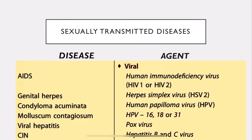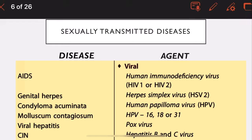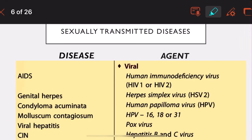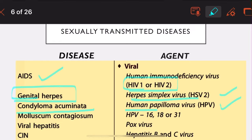Moving on to viral sexually transmitted diseases: AIDS is transmitted by human immunodeficiency virus type 1 and type 2. Genital herpes is caused by herpes simplex virus 2 (HSV-2). Condyloma acuminata is caused by HPV - human papillomavirus. Molluscum contagiosum is caused by poxvirus, with HPV strains 16, 18, or 31 associated with related conditions.